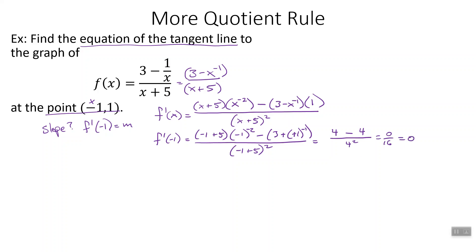If the top is 0, the fraction is 0; if the bottom is 0, it's a problem. So our slope is 0. That means our line is y minus the y value equals 0 times x minus the x value. Negative 1 minus negative 1 gives us plus 1. This whole thing is just 0, so we add the 1 over and we get y equals 1. There's our tangent line. y equals 1 is a horizontal line.